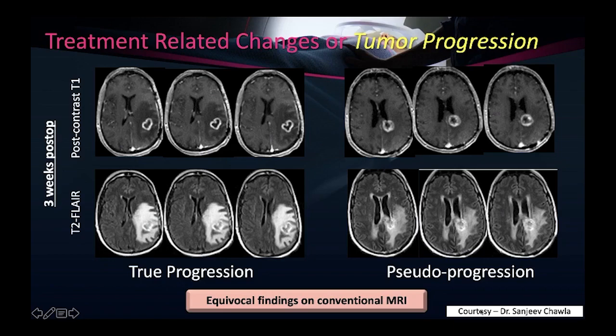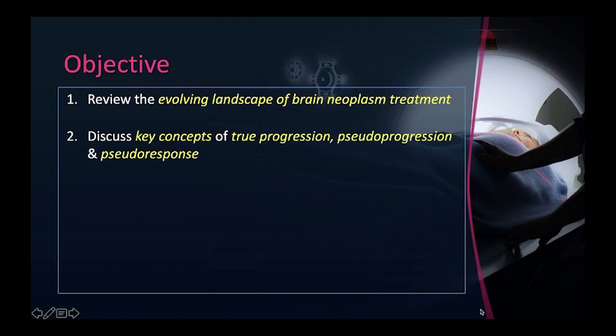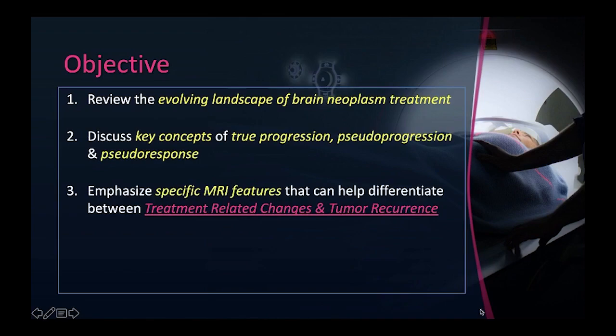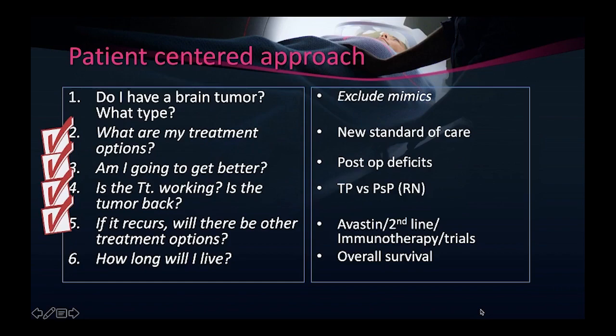We will see how we can better distinguish between treatment effects and tumor progression using a combination of conventional and advanced imaging findings. The objectives are: to review the evolving landscape of brain tumor treatment, discuss key concepts of true progression, pseudoprogression, and pseudoresponse, emphasize specific MRI features that can help differentiate tumor recurrence from treatment-associated changes, and briefly review emerging applications of artificial intelligence for better assessing response in high-grade gliomas.